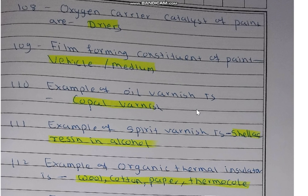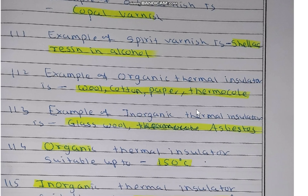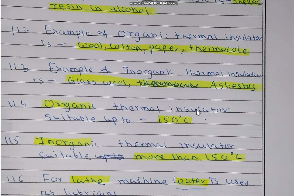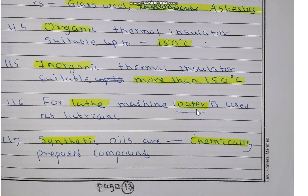An example of oil varnish is copal varnish. An example of spirit varnish is shellac resin in alcohol. Examples of organic thermal insulators are wool, cotton, paper, thermocol, and sawdust. Examples of inorganic thermal insulators are glass wool and asbestos. Organic thermal insulators are suitable up to 150°C, while inorganic thermal insulators are suitable above 150°C.